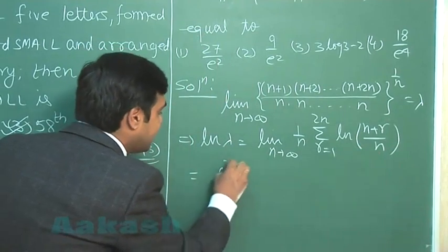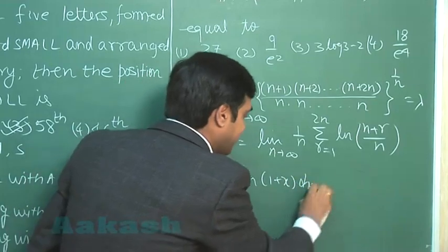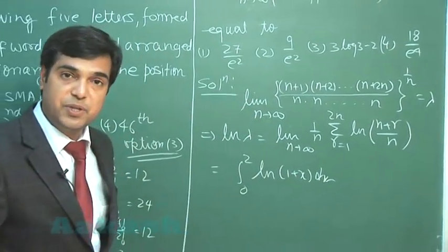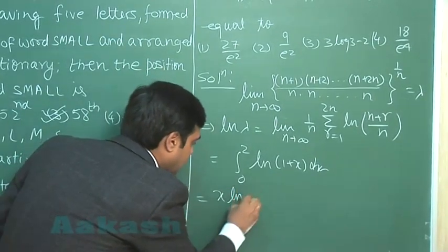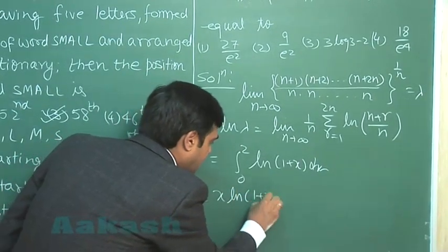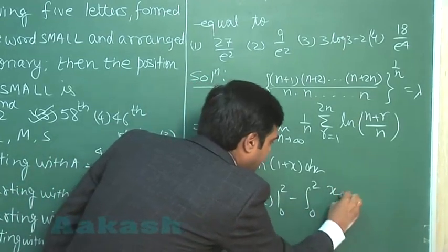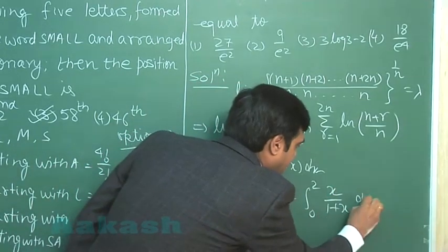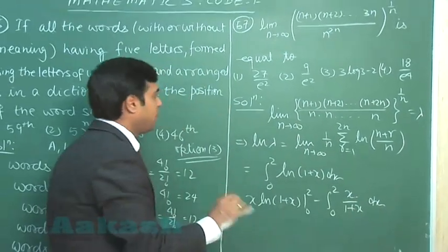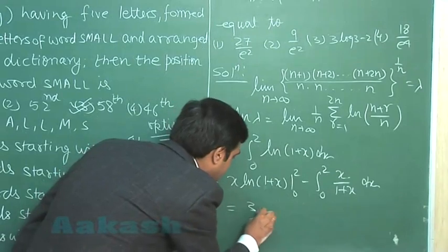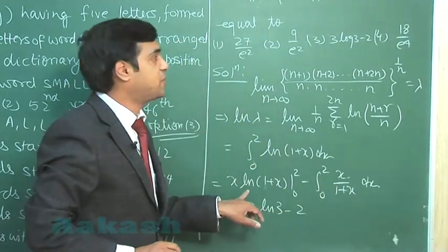We can read it as integral 0 to 2 log(1+x) dx. Simply integrate and substitute the limits to get the required result. Plus 1 minus 1, substitute it, simplifying equals 3 log 3 minus 2. Just integrate and substitute the limits.